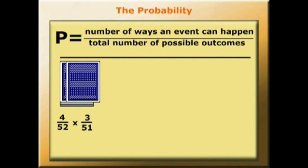Now this time we don't have the same denominator. So we multiply the numerators, 4 times 3 equals 12. And we multiply the denominators, 51 times 52, which equals 2652.